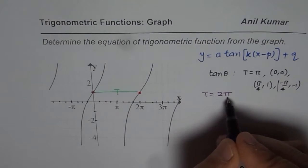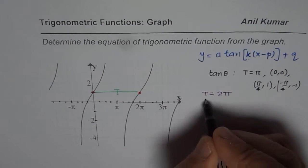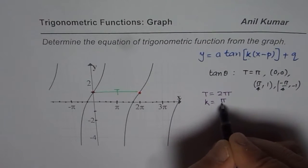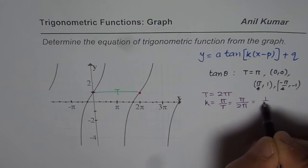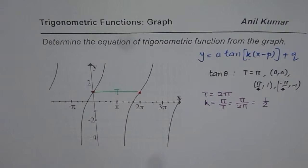Once we know the time period, we can find k. k is equals to pi by time period, so which is pi divided by 2 pi, or half. So the value of k in this case is half.